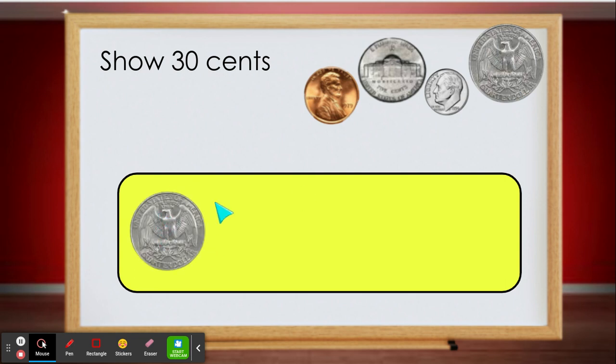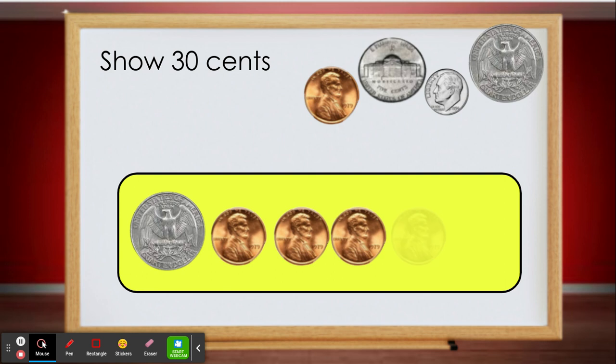25. I'm going to add pennies until I get to 30 cents. 25, 26, 27, 28, 29, 30. 25 cents and 5 pennies equals 30 cents.